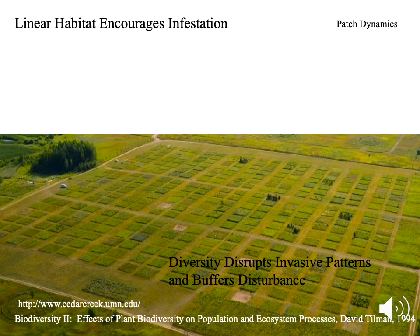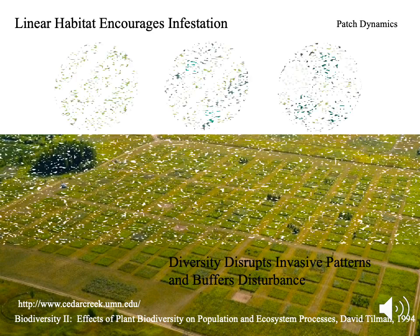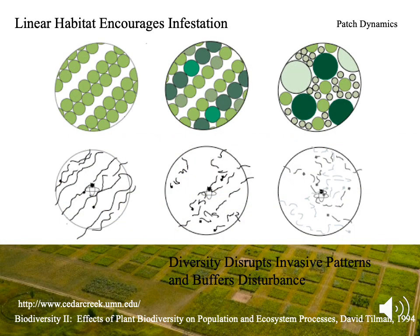Having diversity also buffers disturbance — some plants are better in the cold, some in dry weather. Diversity makes the patch more resilient and ensures the anchor tree or shrub gets its needs met because there are enough plants to react to and remain resilient through different weather extremes. This is a function of using polycultures.